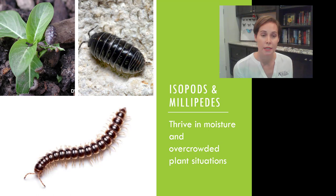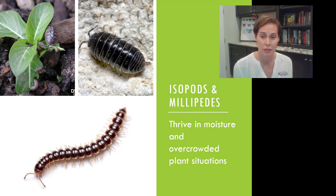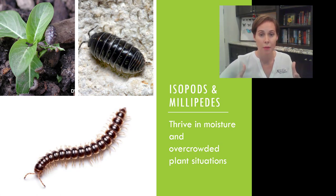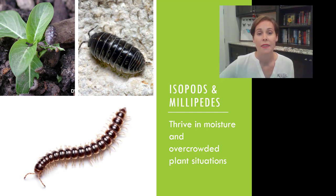Isopods — our roly-polies and pill bugs — and millipedes are chewing insects that will thrive in moisture. They occur when you have intensive moisture, a plant that's very bushy and close to the ground, or overcrowded plant situations where humidity goes crazy. To control these, try to cut back on the plants and trim them up so leaves are off the ground. Protect young transplants, cut back on the mulching, allow things to dry out for a bit, and decrease watering — that usually helps control these guys.